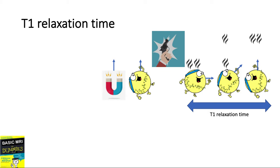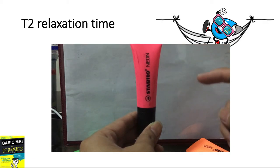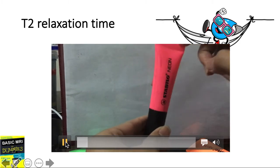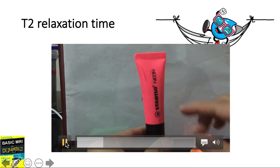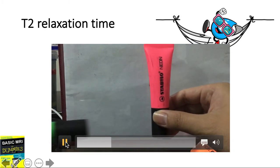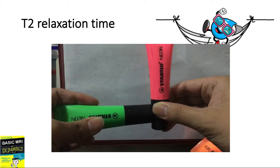This is the T1 relaxation time — again, it is quick for fat protons. Now what about T2 relaxation time? Going back to our proton, it spins in the same direction as the net magnetization, then gets hit with a 90-degree RF pulse and absorbs some of the energy.